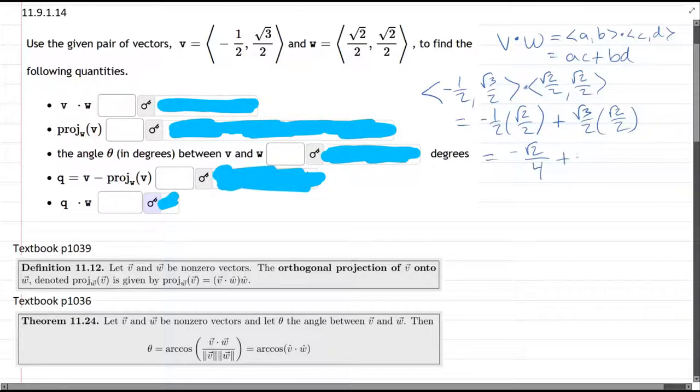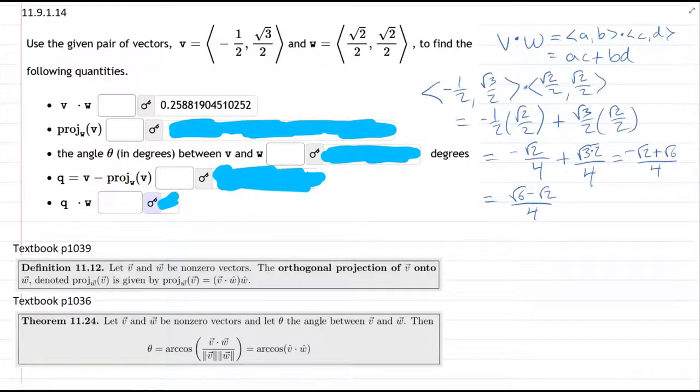When you multiply fractions, numerators and denominators get multiplied. So we have negative one times square root two, two times two is four, plus square root three times square root two. You can write it as square root three times two over two times two, which is four. Common denominator, you can add these together. We have negative square root two plus square root six, all over four. I like to write the positive one first. Turn it into a decimal, and that should be the number you get right there.